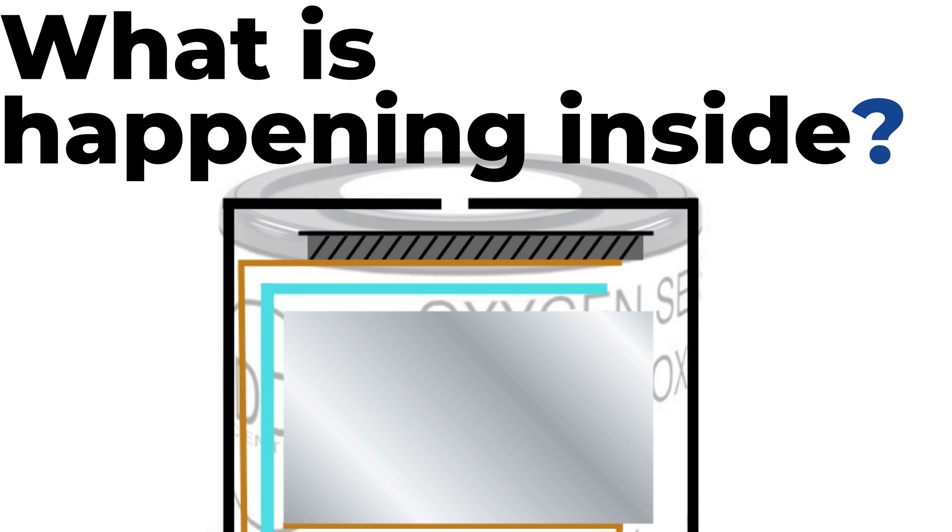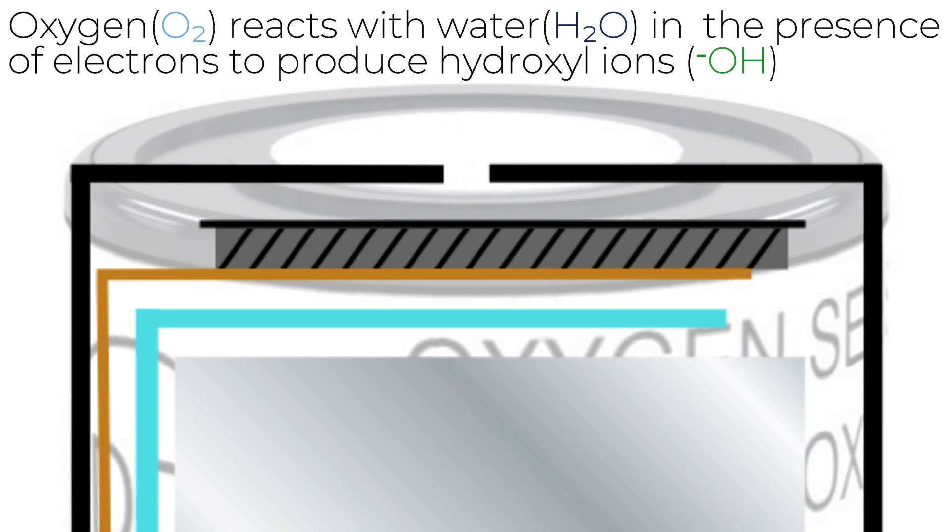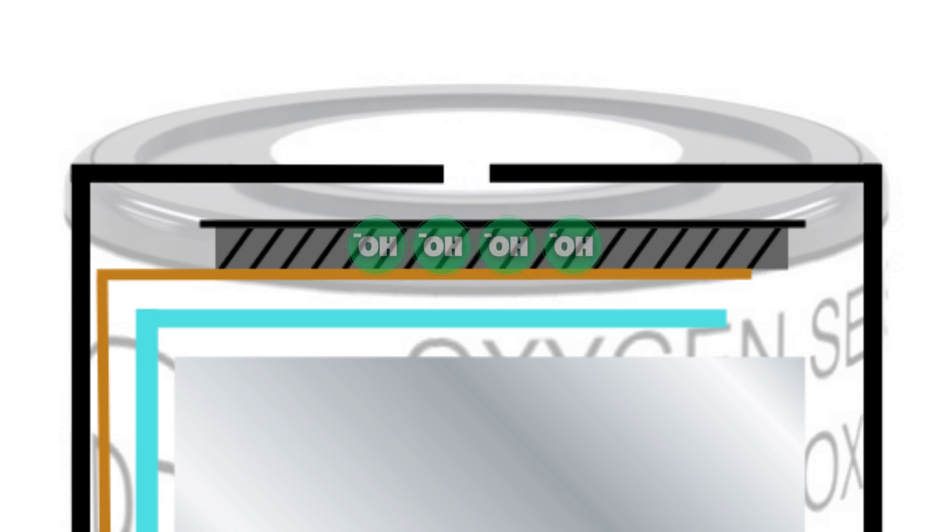When this sensor is in use, oxygen molecules diffuse into the sensor via the capillary where they encounter the sensing electrode. On the surface of the sensing electrode, the oxygen molecules in the presence of water molecules and electrons are reduced to hydroxyl ions which are soluble in the alkaline electrolyte.